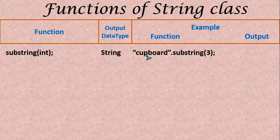For example, we have cupboard dot substring of 3. Here we have 0, 1, 2 and then 3 is the argument given. From starting 3 that is b remaining everything it is going to be taken. Output here will be board.